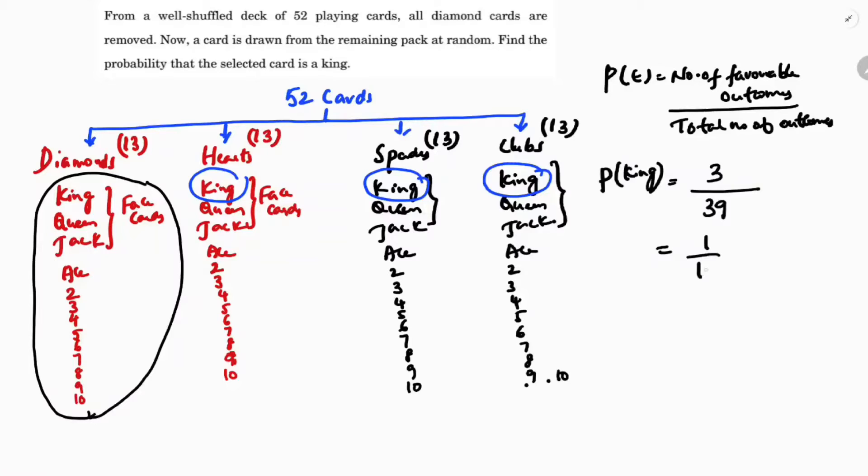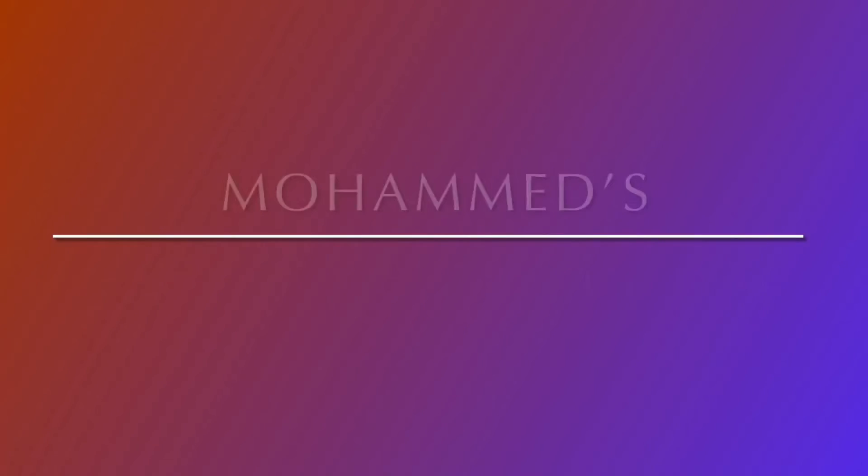So what is the probability of getting a king is 3 by 39, and if you cancel, 1 by 13. So probability of selecting a card which is king is 1 by 13.